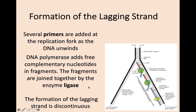The lagging strand is a bit more complicated. You need several primers at this replication fork, and DNA polymerase still adds complementary nucleotides, but they're added in fragments — not a nice continuous line. It's added in fragments at the 3' end, and they are joined together by another enzyme called ligase, which works a bit like glue. These fragments are joined together by ligase in a discontinuous strand to make another new strand.